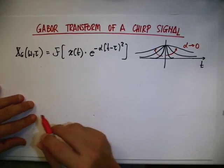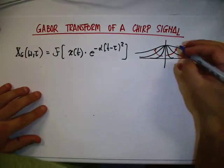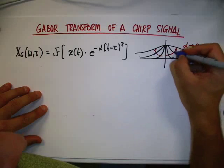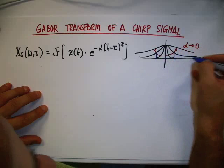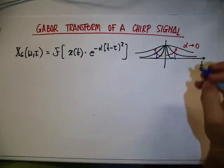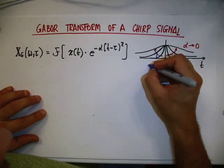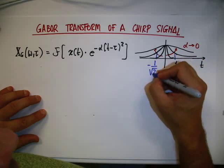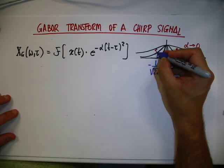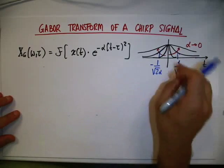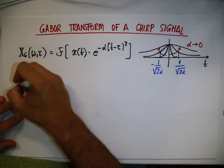As alpha tends to 0, the window becomes larger and larger. The size of the window is roughly given by looking at where the curvature of the Gaussian bell changes, which is at the location 1 over square root of 2*alpha and minus 1 over square root of 2*alpha. That gives the spread with respect to zero.